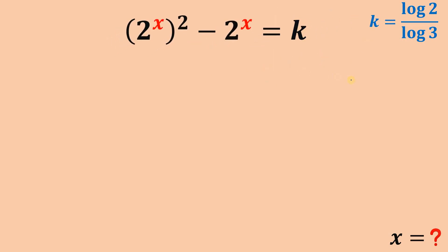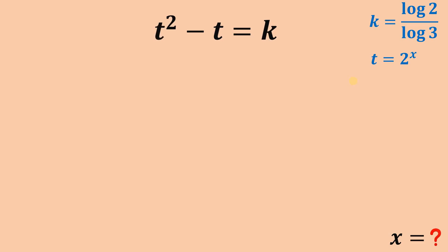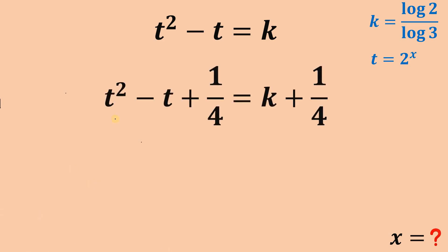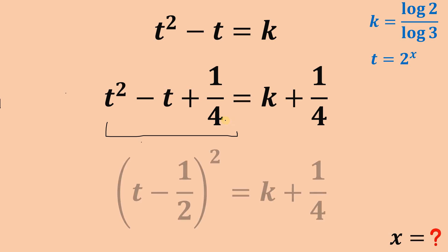Now another substitution: let's replace 2 raised to the power of x with the variable t. If we do that, we get t squared minus t equals k. We now have a quadratic equation in terms of t with constant k. To solve for the value of t, we complete the square on the left-hand side. Let's add 1 over 4 to both sides. Notice the left-hand side t squared minus t plus 1 over 4 is a perfect square trinomial.